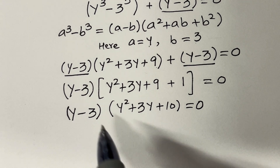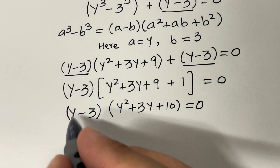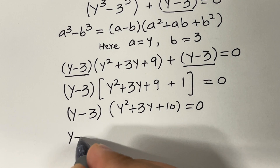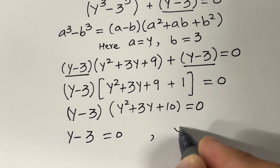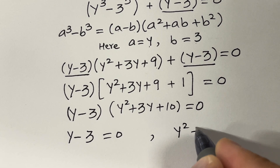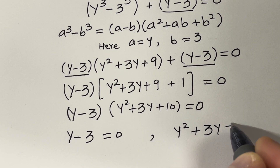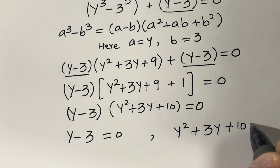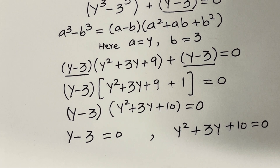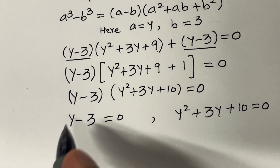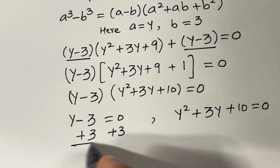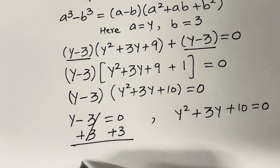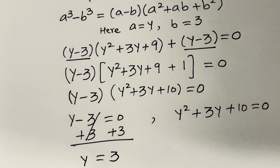Since the product is zero, we set each factor to zero. From the first factor: y minus 3 equals 0, so y equals 3. From the second factor: y squared plus 3y plus 10 equals 0.